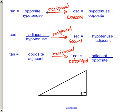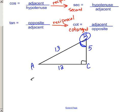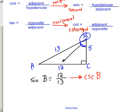Let's use the same 5-12-13 triangle ABC and focus on angle B. The sine of angle B is opposite over hypotenuse, which is 12 over 13. The reciprocal of sine is the cosecant, so the cosecant of B is hypotenuse over opposite — that's 13 over 12. It's simply the reciprocal of the sine value.